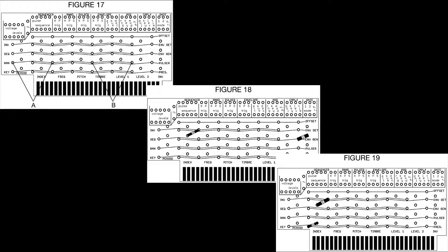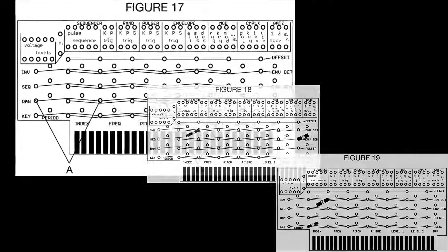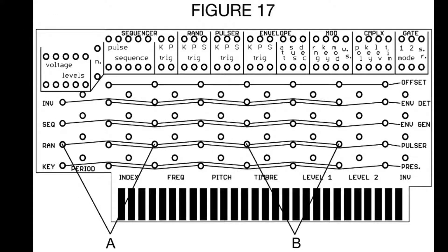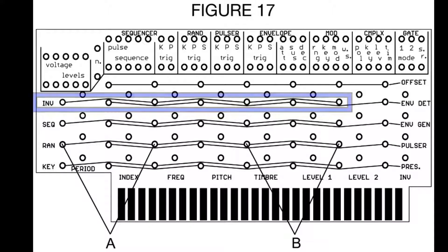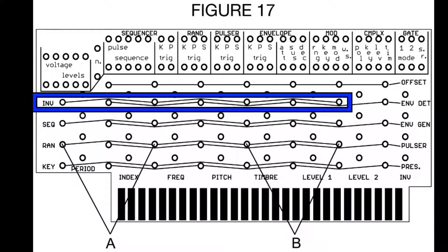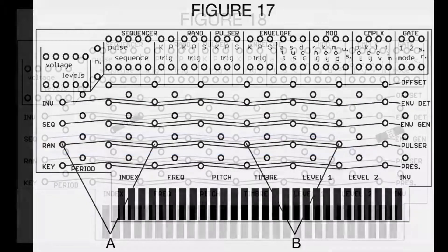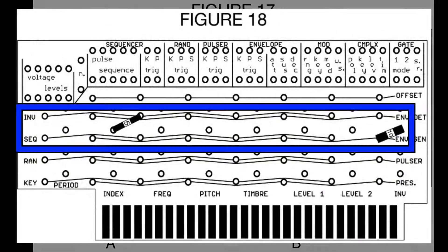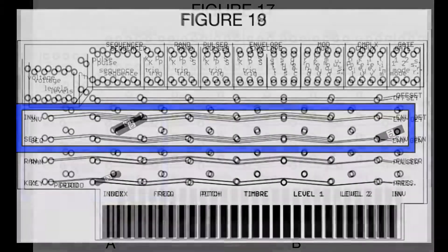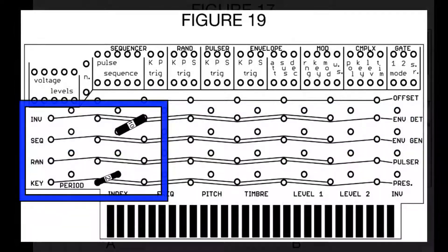These three figures, 17 through 19, all have one thing in common. They explore different ways of using the inverter row of the card. Figure 17 explores random voltages, 18 explains inverted voltages, and 19 looks at summing control voltages.